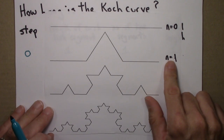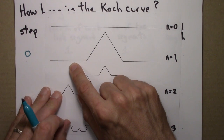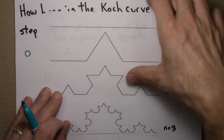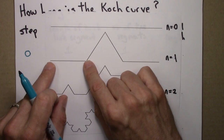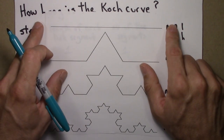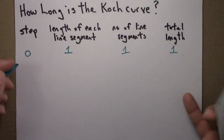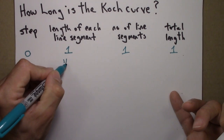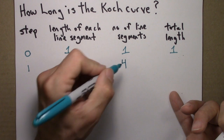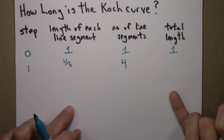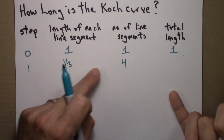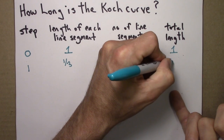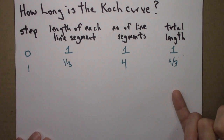At the first step, there are four line segments, and each line segment is one-third the length of the original. So at step one, the length of each line segment is one-third, and the number of line segments is four. If we have four things each with a length of one-third, the total length is four-thirds.